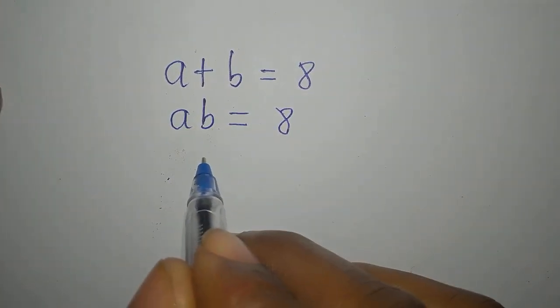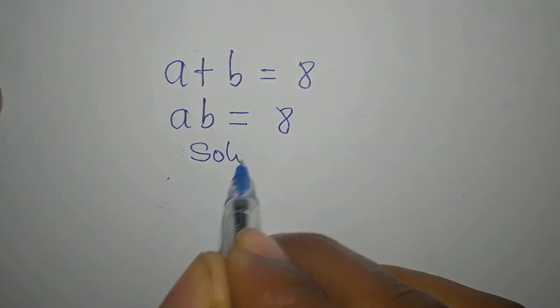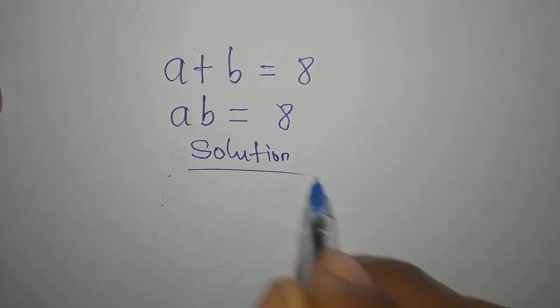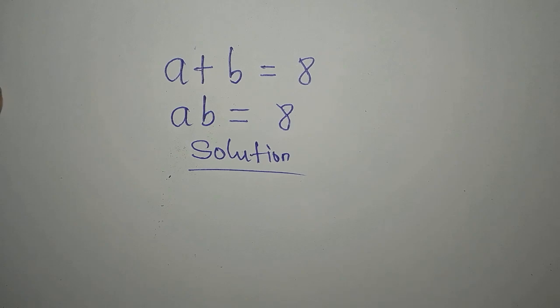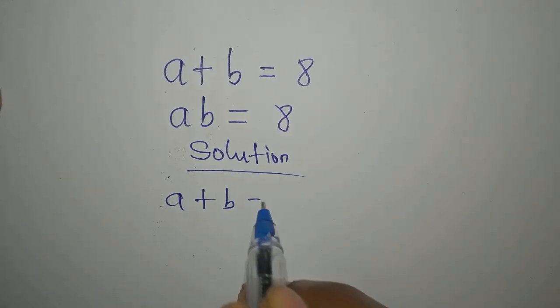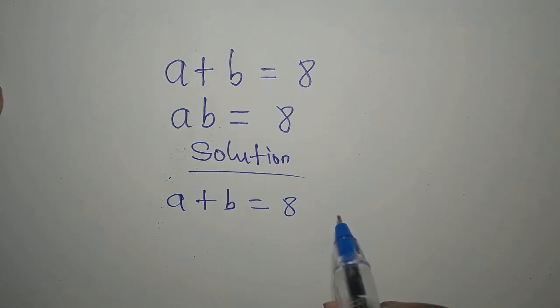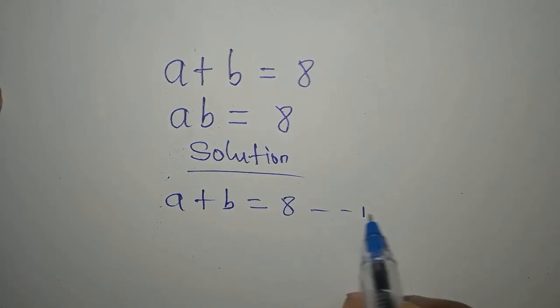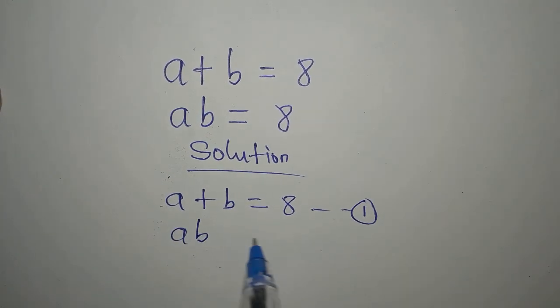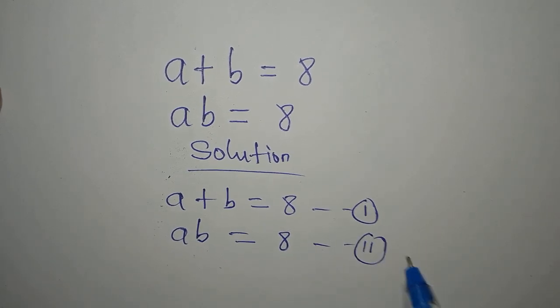Hello everyone. Let's provide the solution to this problem. A plus B equals 8. This is our equation 1. Then we have AB equals 8. This is our equation 2.